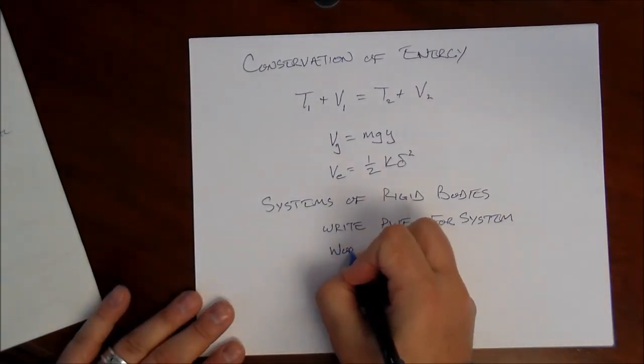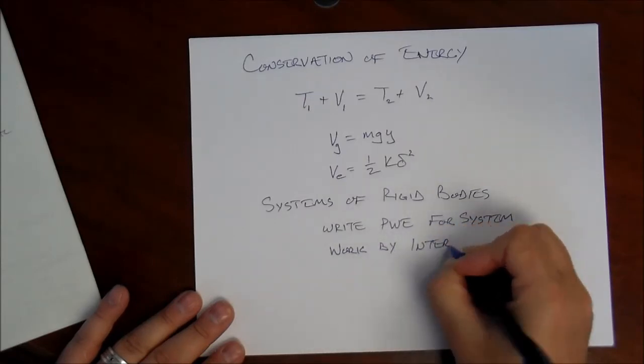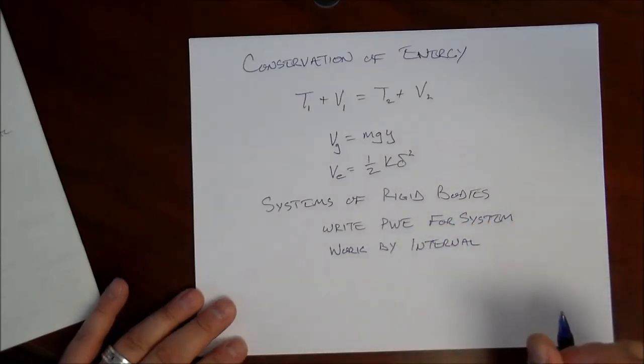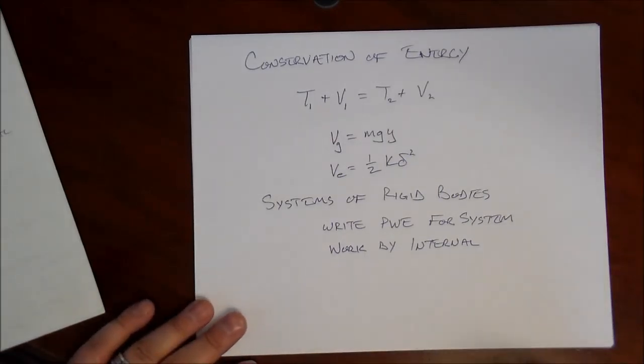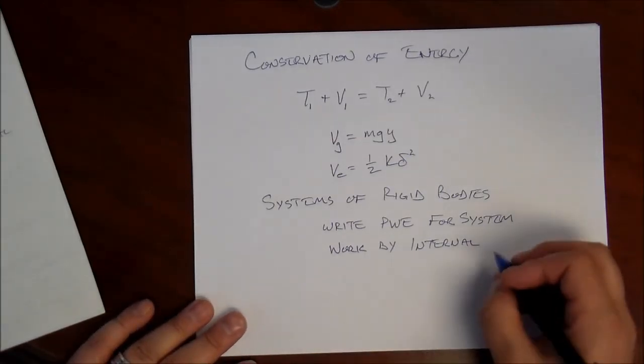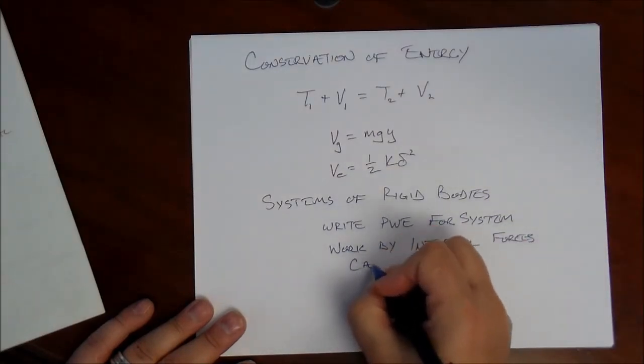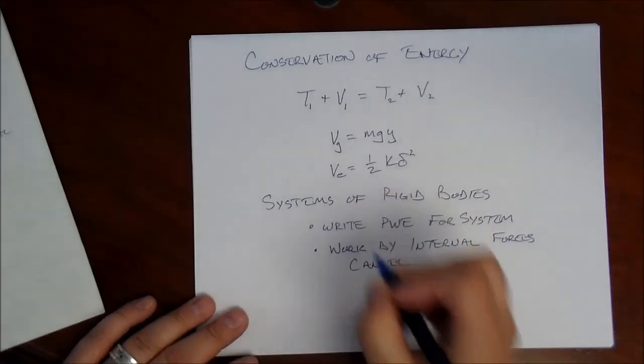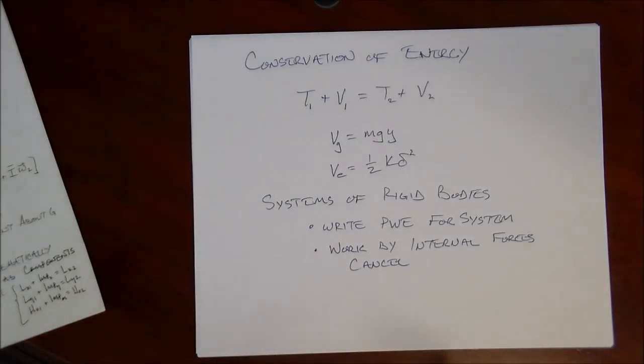And, just like we saw for particles, the work done by internal forces, that is forces associated with the interactions of rigid bodies bumping into each other connected by cables or ropes or whatever, those internal forces will cancel out. So, you can ignore those. And that's all there is to this section, the principle of work and energy, just like we saw for particles with a couple of modifications.